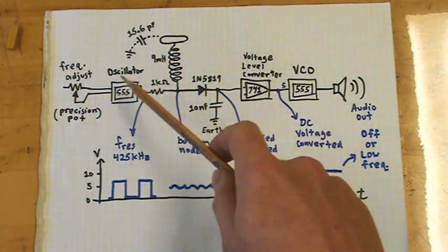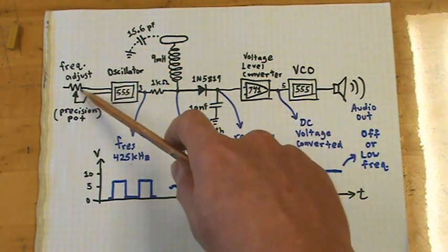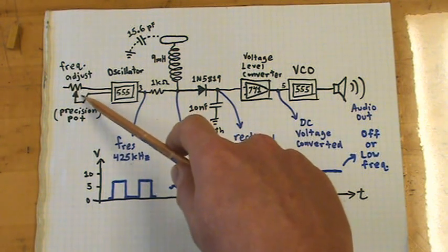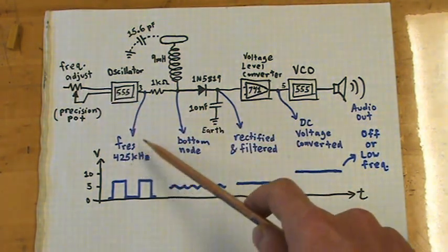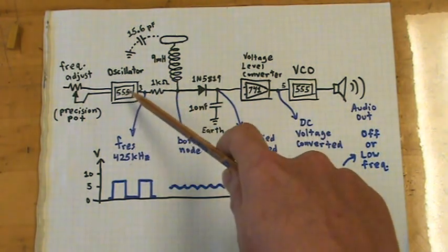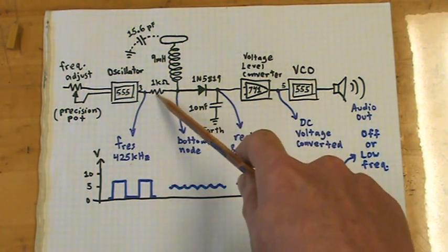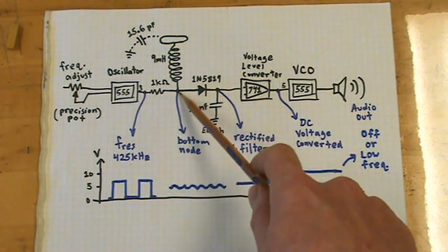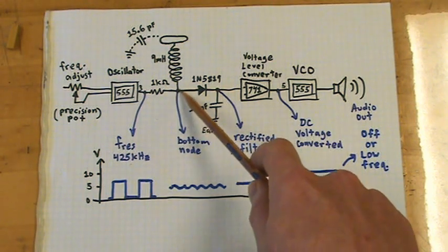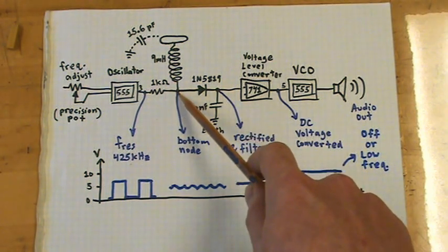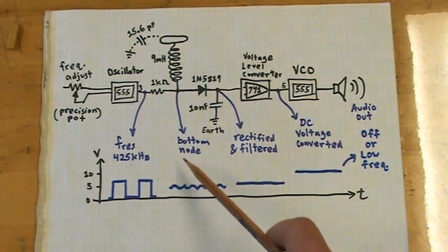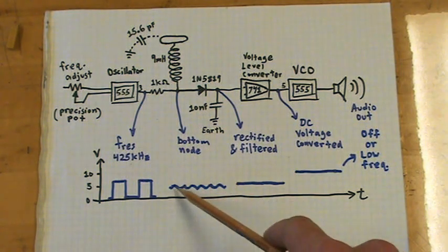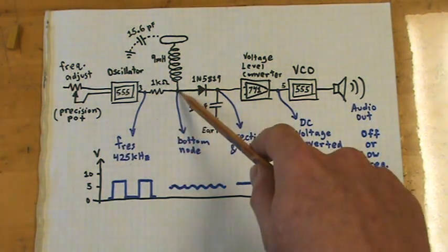The LC circuit includes the coil and the top load. Got a precision potentiometer for making sure that it's tuned to exactly 425 kilohertz or thereabout. Then we go through the resistor, and that frequency, that square wave, gets pumped into the LC resonant circuit. If it's at resonance, then the voltage at this node will be very low.